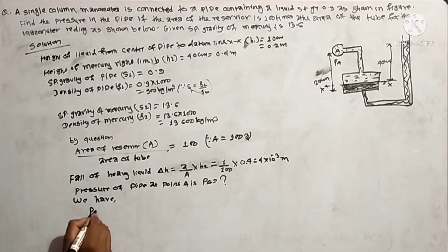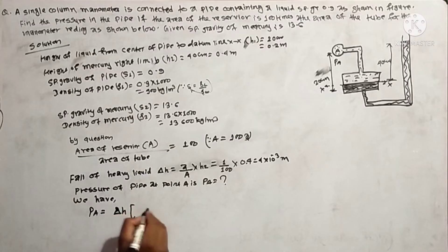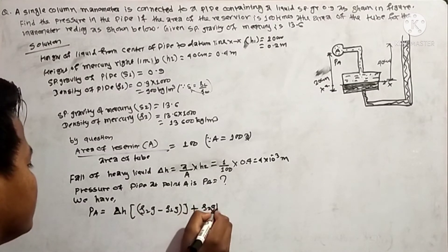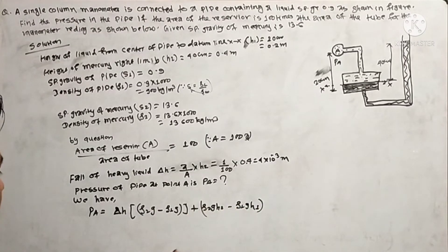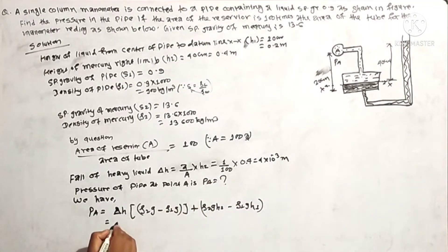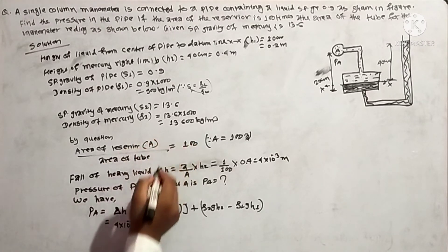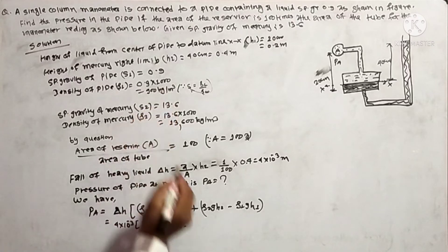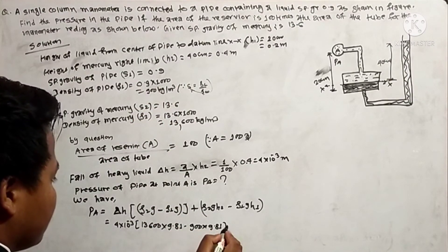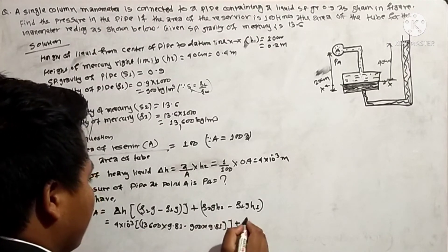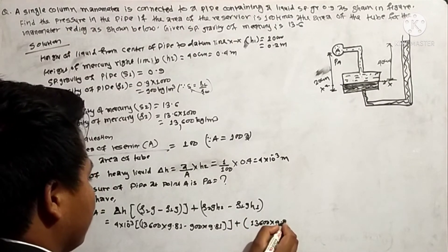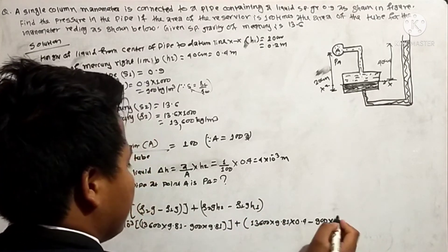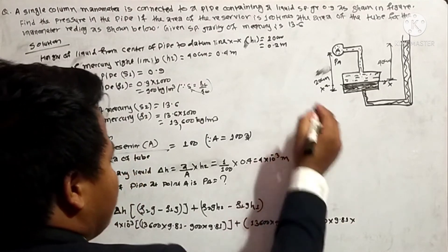The pressure formula is: PA is equal to delta S into (rho 2 g minus rho 1 g) plus rho 2 g S2 minus rho 1 g H1. Substituting: delta S is 4 into 10 to the power minus 3; rho 2 is 13,600; rho 1 is 900; g is 9.81; S2 is 0.4; H1 is 0.2.